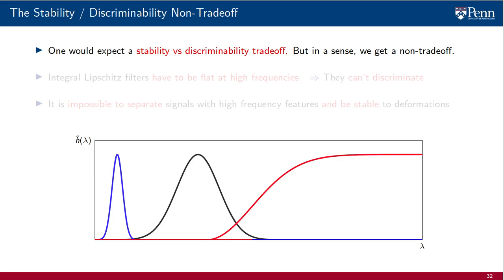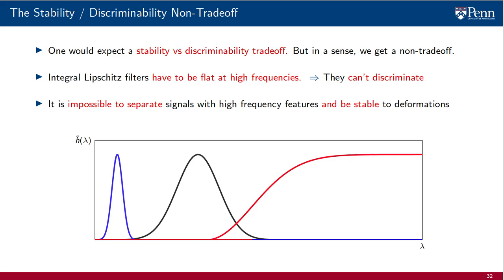Graph filters can be stable only if they are integral Lipschitz. But integral Lipschitz filters have to be flat at high frequencies. Therefore, it is impossible for them to discriminate high-frequency signals. It is impossible to use a graph filter to separate signals with high-frequency features and be stable to deformations at the same time. There is no trade-off. It is simply not possible.